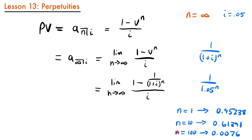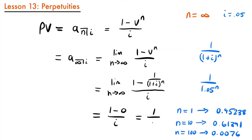As n approaches infinity, this value is becoming zero — a negligible amount. That's also true for any value of the interest rate we pick. Whether it's 0.04 or 0.07, the value still gets smaller toward zero as n gets larger. So this expression becomes zero, meaning we evaluate the limit as 1 minus 0 divided by i, which equals 1 divided by i.